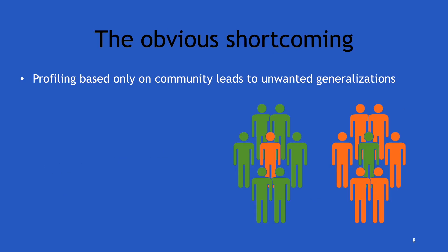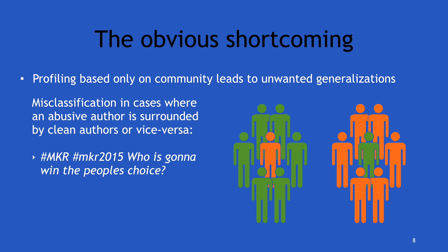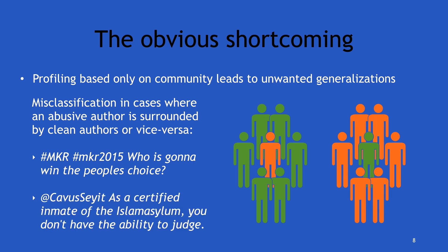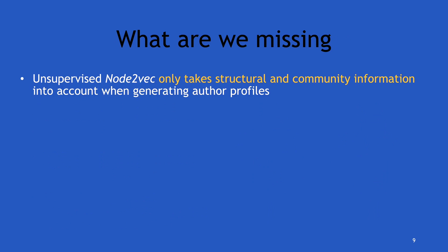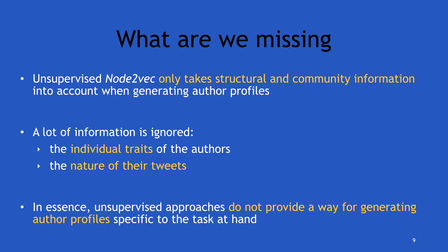But there's an obvious shortcoming we noted that was hurting both precision and recall: there can be misclassification if you're a clean author surrounded by abusive authors, or vice versa. So we're misclassifying some benign tweets and also some that are not benign. What are we really missing? The fact that Node2Vec was producing author profiles which only take structural and community information into account — not the individual traits of authors or the nature of the tweets they've already written. In that sense, we were producing author profiles not actually specific to the task.